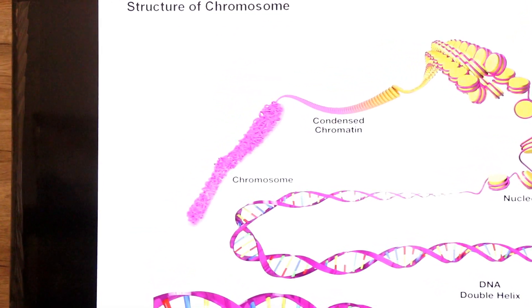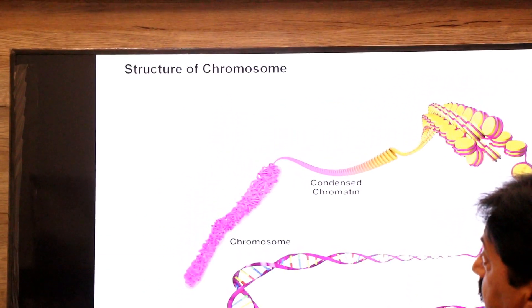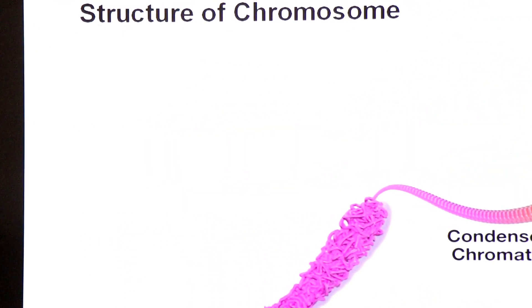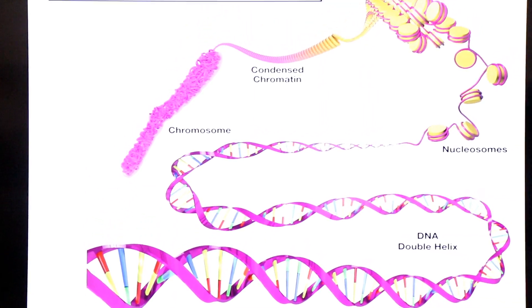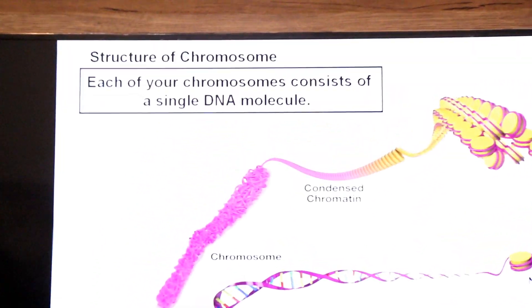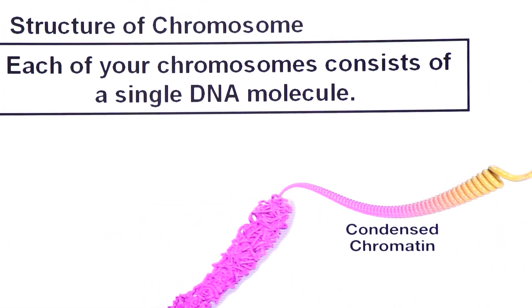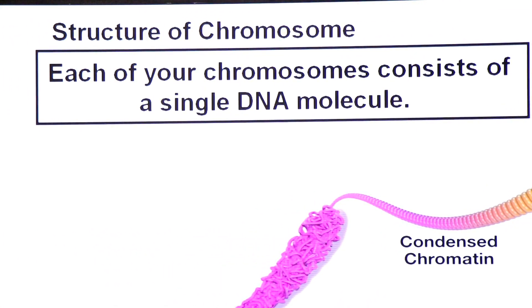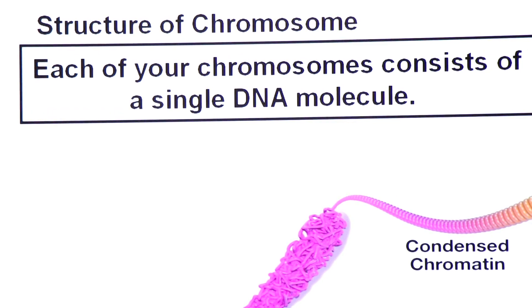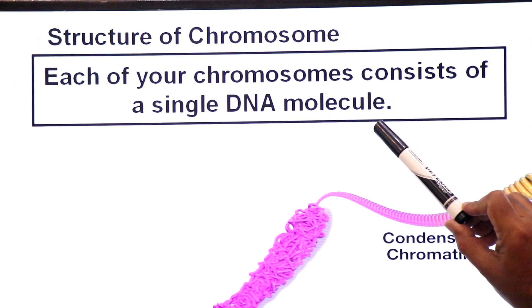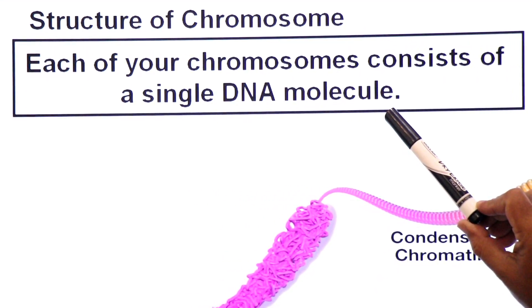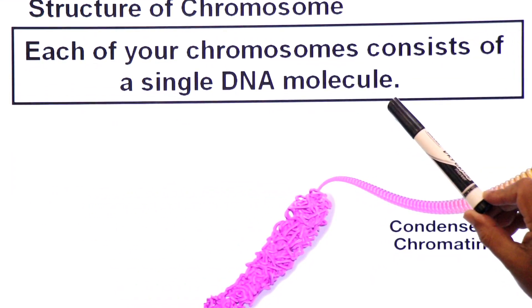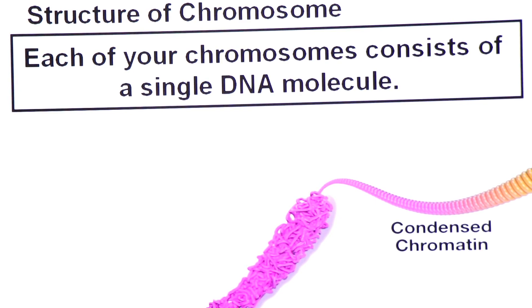Now we will discuss the structure of the eukaryotic chromosome. Remember, your one chromosome is one molecule of DNA. Each chromosome consists of a single molecule of DNA.